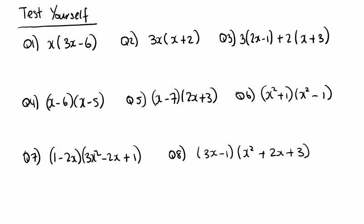Here we go: x by 3x is 3x squared, and x by minus 6 is minus 6x. 3x by x and 3x by plus 2 gives 3x squared plus 6x. No like terms in either of these — we're fully done.